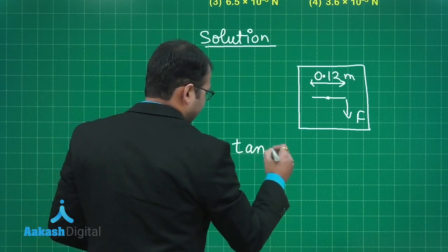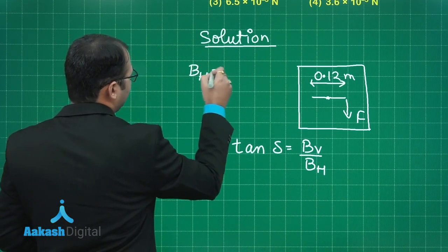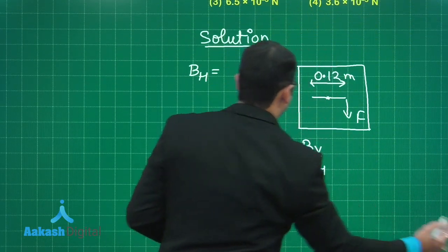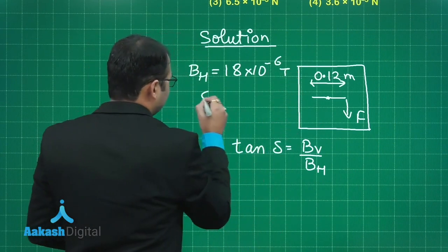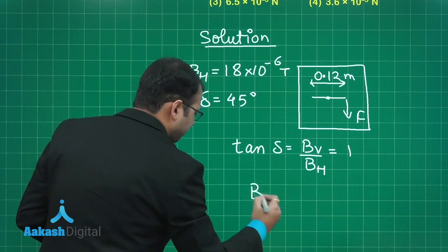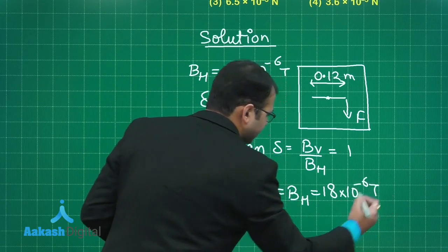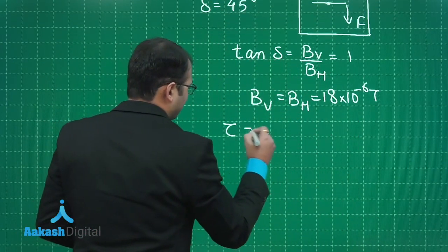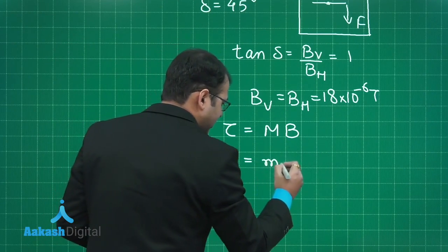At a place, it was given that tan delta equals BV by BH. In question, the horizontal component of magnetic field is given as 18 into 10 to power minus 6 Tesla. And the delta given to us is 45 degree. From here, tan delta would be equal to 1, so BV would be equal to BH, equal to 18 into 10 to power minus 6 Tesla. Now to find the torque by this component, the formula is MB. The maximum torque which can be applied is magnetic moment times the vertical component of magnetic field, which is pole strength into the length of the magnetic needle into the vertical component of magnetic field.